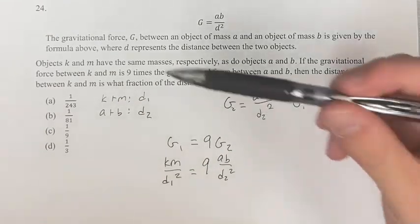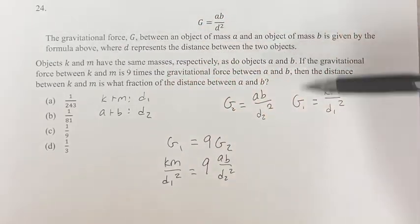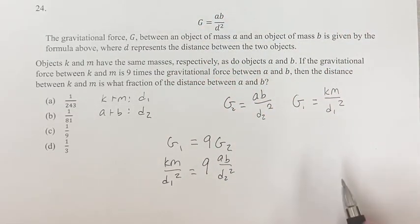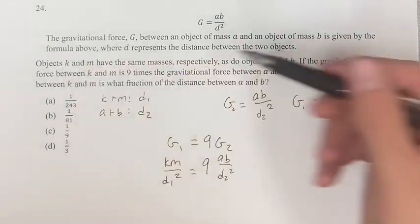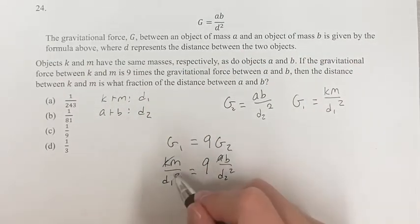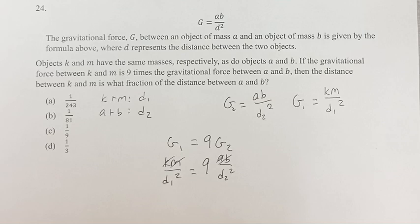What are we saying? We're saying that K and M have the same masses of A and B. So if we divide by the mass of any of these objects, then one of those would cancel, and then we divide by that same mass again, they all cancel.